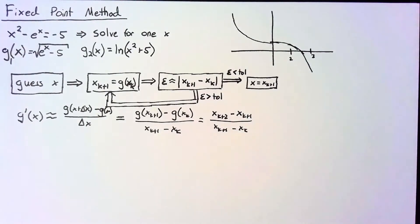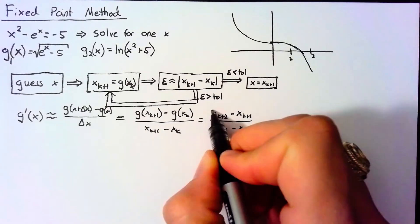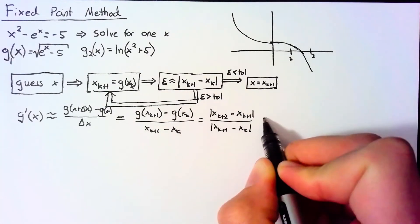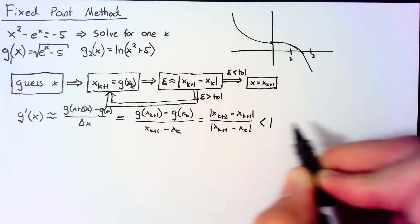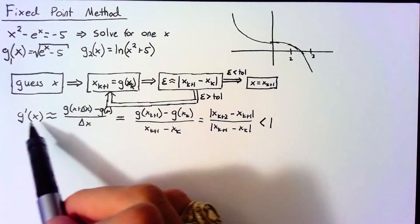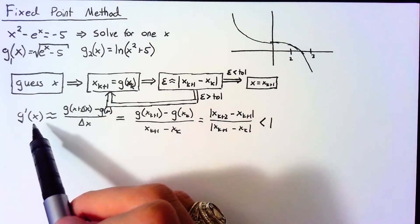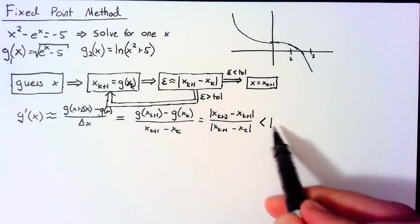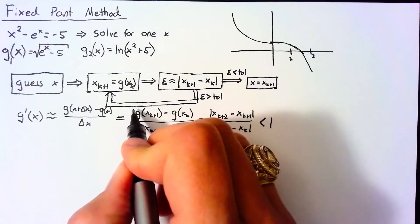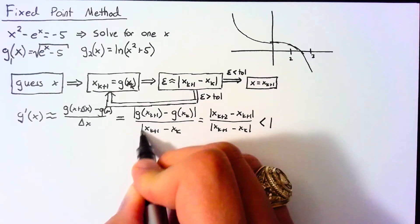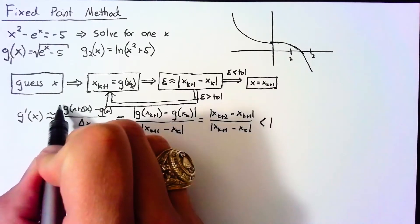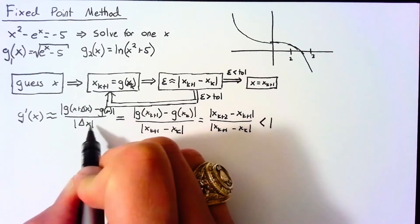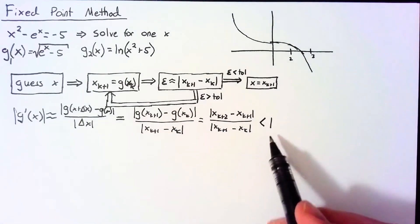If these are getting closer together, then we should be approaching a fixed point. So our goal here is that the ratio of these distances is going to be less than 1. So if we can calculate g'(x) and the absolute value of that is less than 1, then we can be relatively sure that our function is going to converge.